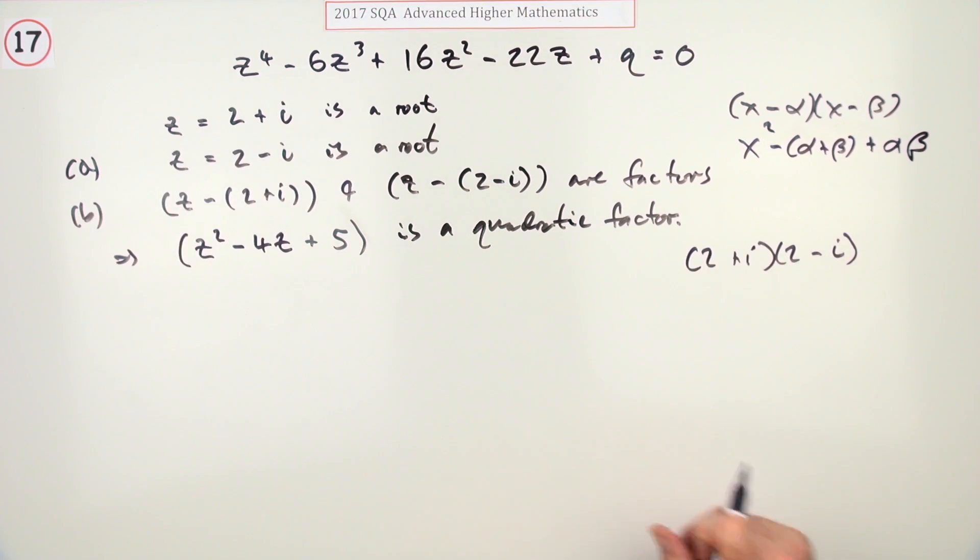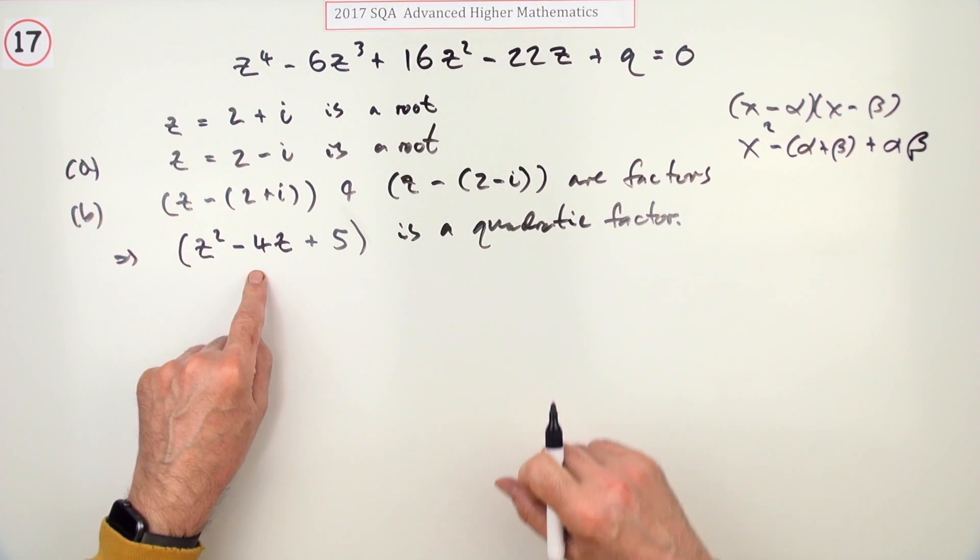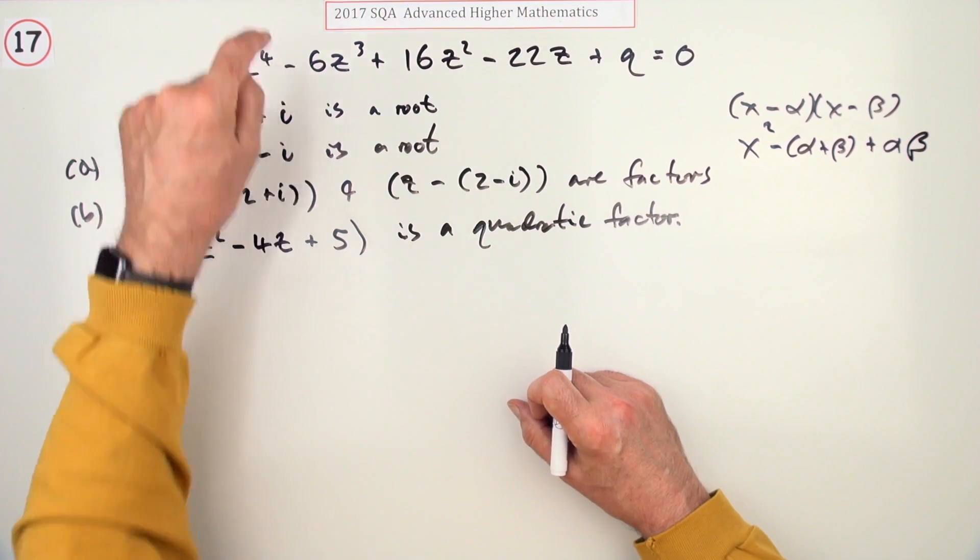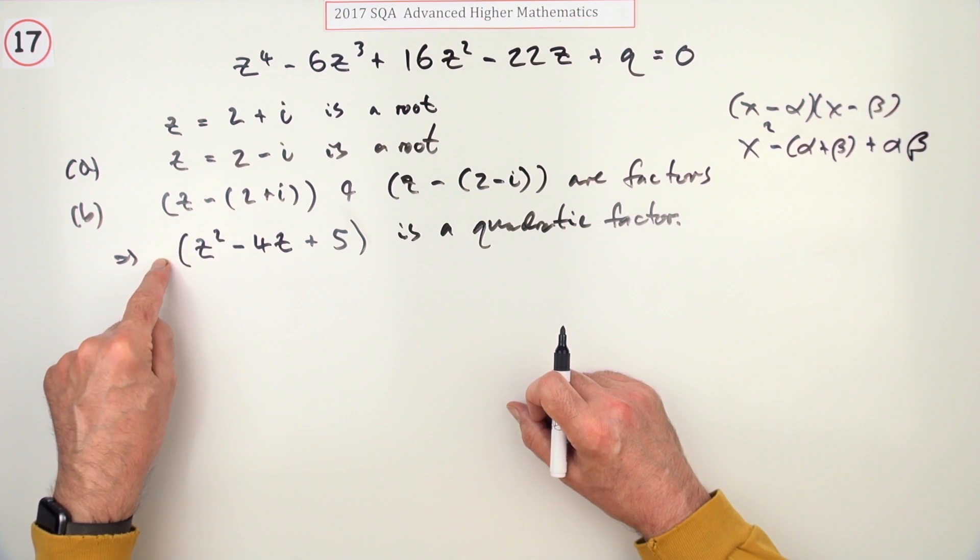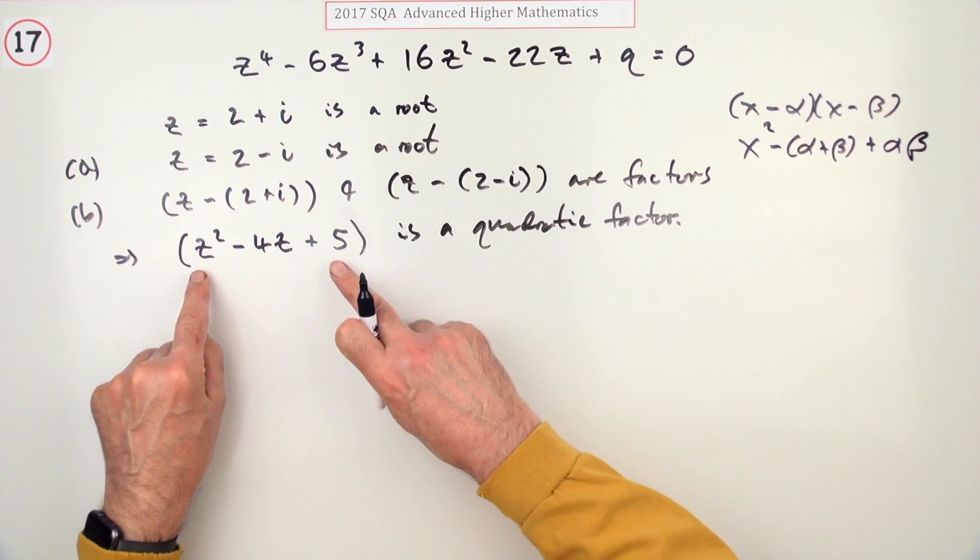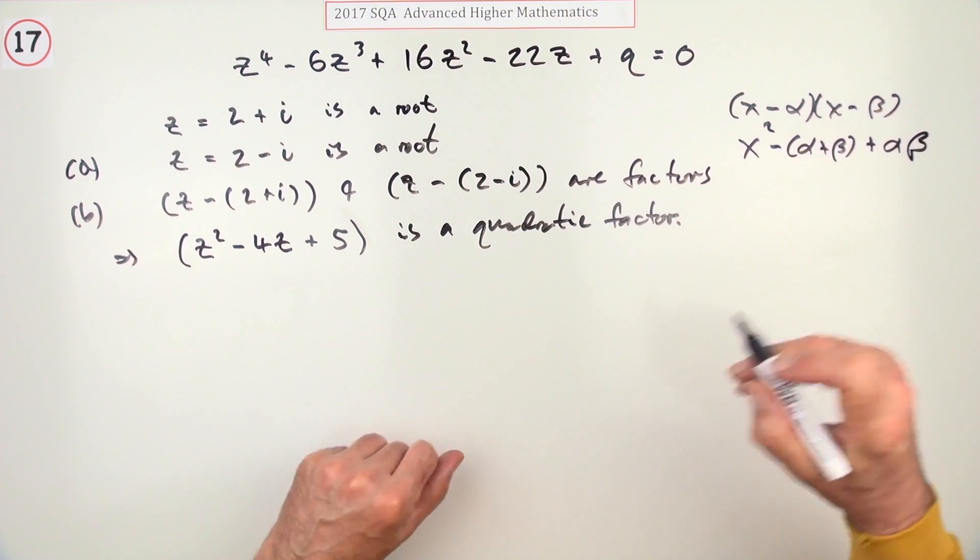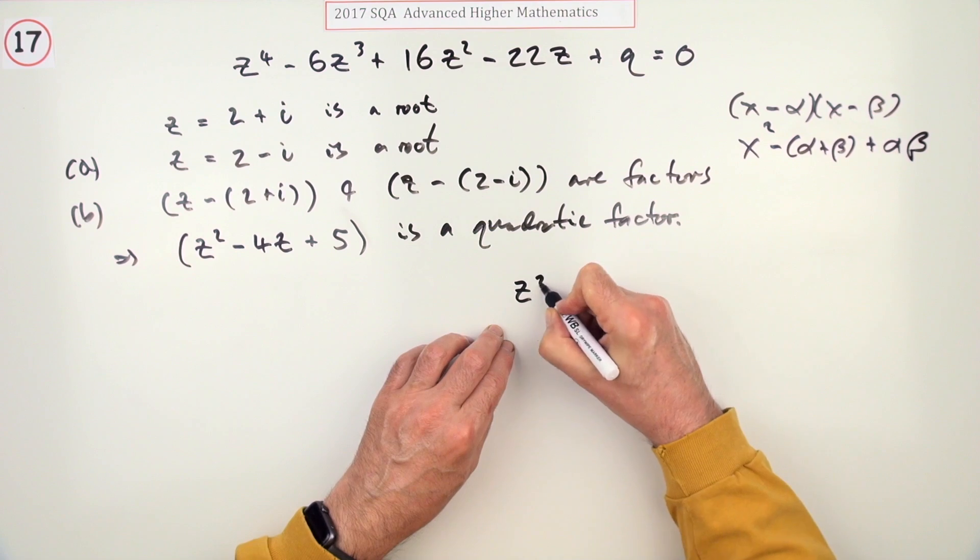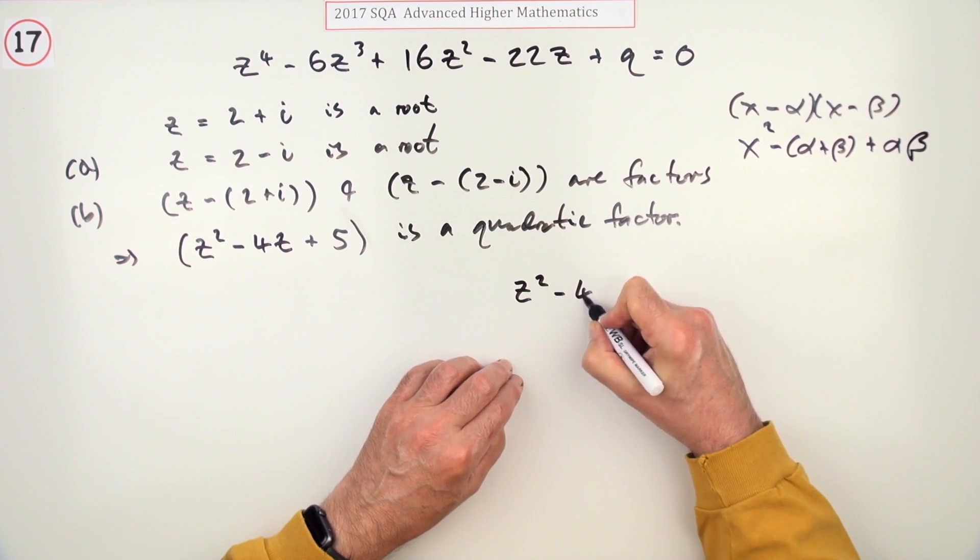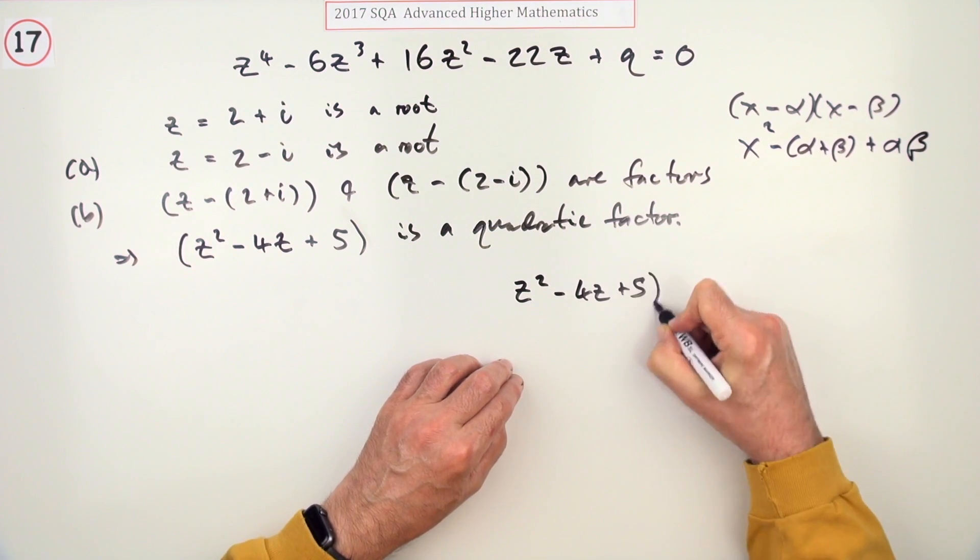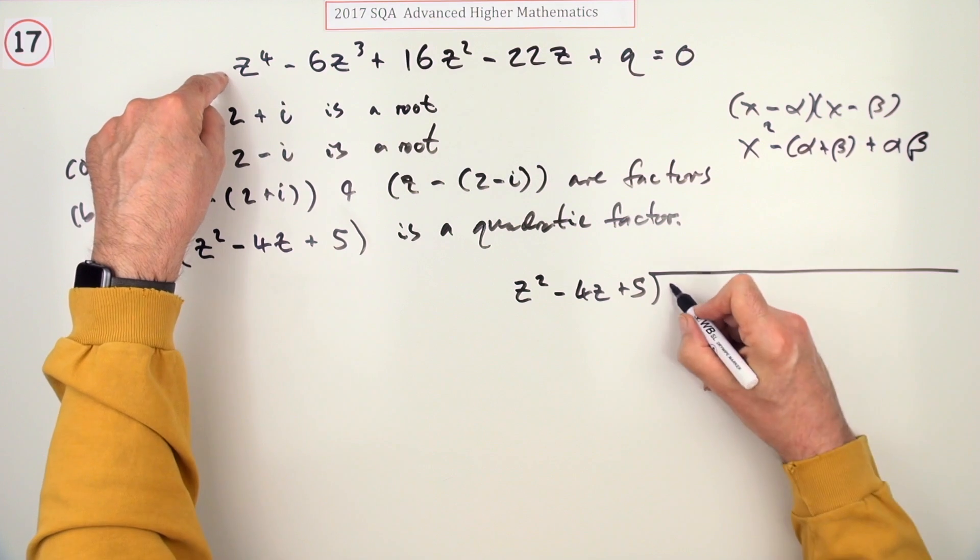Problem here is, if it had been power three you could have found the remaining linear factor quite easily. However, it's power four, so you'll have to do the full division to see what the other factor is. I'll divide z² - 4z + 5 into the original polynomial.